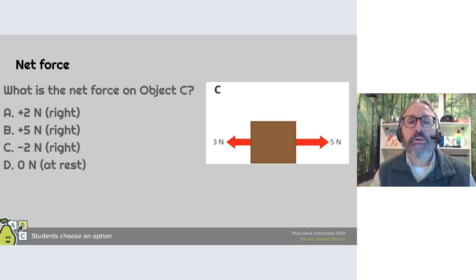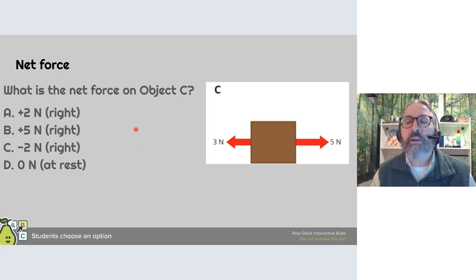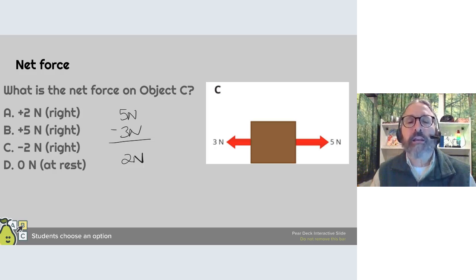Let's look at the net force of object C. We have two forces: one pushing to the left at 3 newtons and one pushing to the right at 5 newtons. When they're in opposite directions, we subtract them: 5 newtons minus 3 newtons equals 2 newtons. This is an unbalanced force of positive 2 newtons to the right.